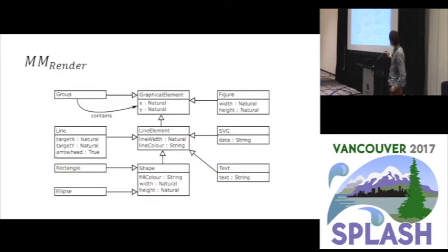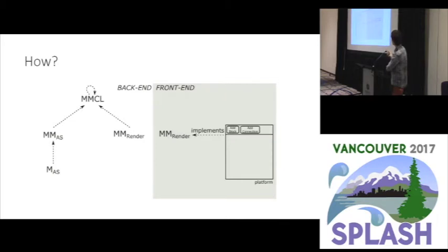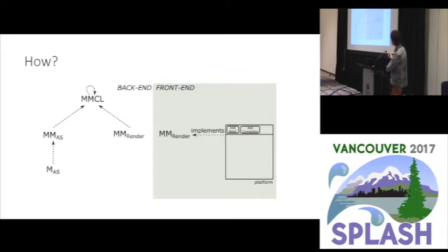We will do this by explicitly modelling the model exchanged between the backend — where abstract syntax is manipulated — and the frontend — where the concrete syntax is visualized. We define a metamodel of the rendered model, the MMRender, in which we define graphical elements like a line element, a shape such as a rectangle or ellipse, lines, SVG, or text data. The backend will have a model, the mRender, which conforms to this MMRender, and we will also have a metamodel of our abstract syntax — our causal block diagrams language — along with the causal block model we want to visualize. In the frontend we will have our platform, for example tkinter or SVG, and this will implement the same MMRender.